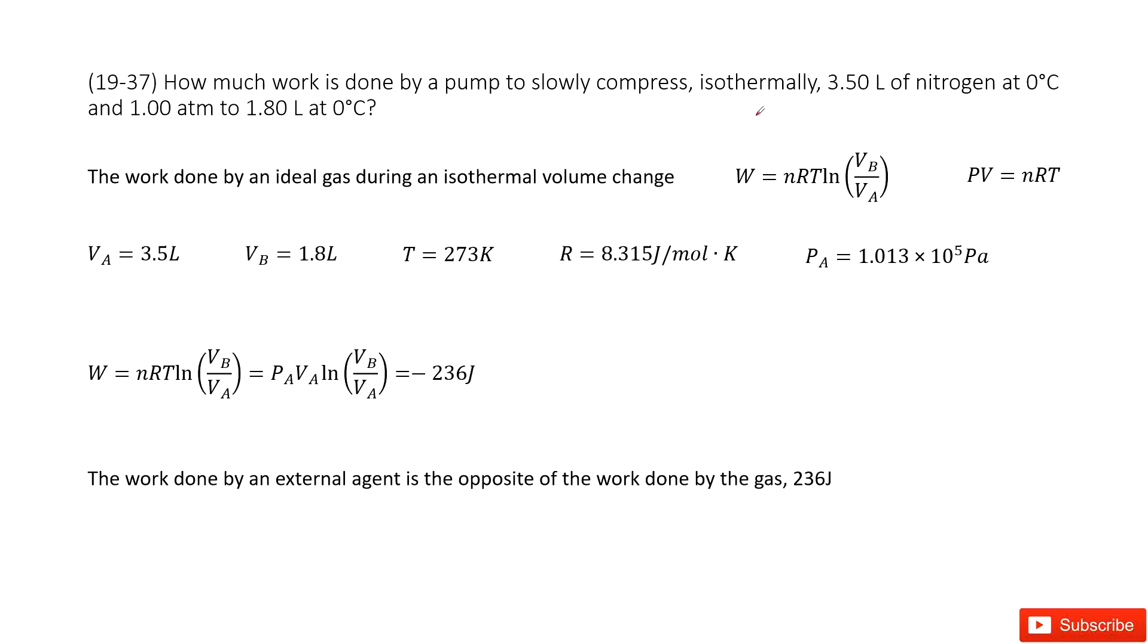The given quantities tell us the initial volumes: Va is 3.5L, Vb is 1.8L, and temperature is constant, zero degrees, and we can convert it as 273K.